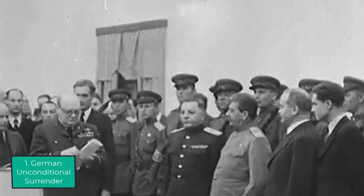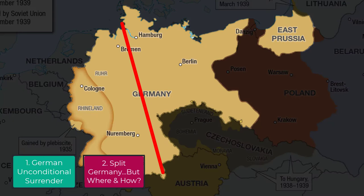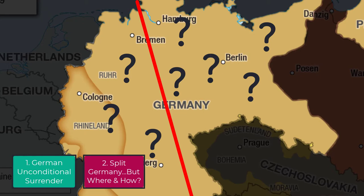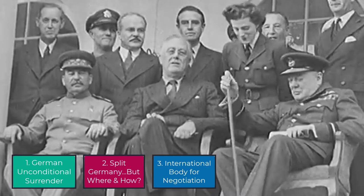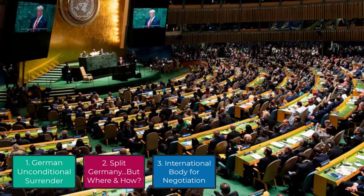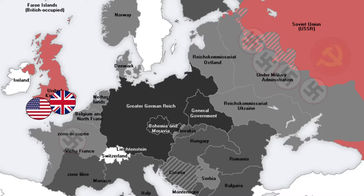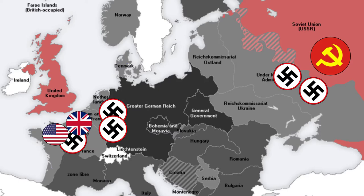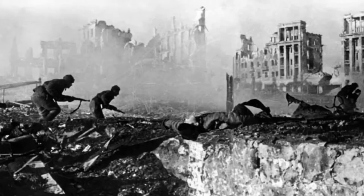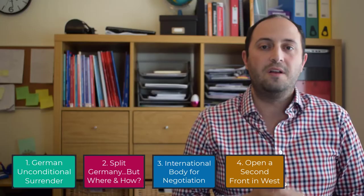The first major agreement was that they would aim to force Germany's unconditional surrender. The Allies also agreed that Germany would need to be split after the war, though at Tehran no solid agreements were made as to how this split would look. They also agreed that an international body should be established to mediate future problems through discussion and negotiation — a more successful version of the League of Nations that would later become the United Nations. Another agreement, driven by Stalin, was the necessity to open up a second front, particularly in France. If the US and Britain could attack via the West, Germany would be forced to redirect troops to meet a joint attack, easing pressure on the Eastern Front where the Soviet Union were facing huge losses. The date for this second front was set as June 1944 and would eventually become Operation Overlord, the D-Day landings.